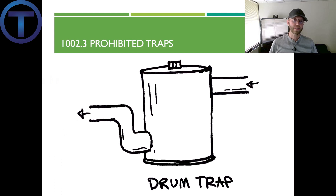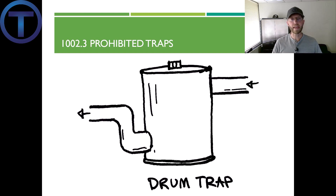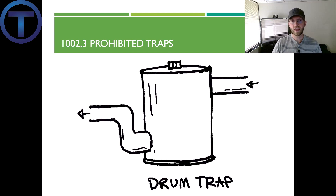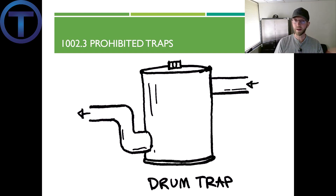Finally, prohibited trap number six: the drum trap. A drum trap is basically a cast iron can — the fluid comes in one side, and you create the trap by the way the 90s are formed on the outlet of the drum. These things are notorious for clogging. They were installed for decades, again probably prior to the 1970s, where you're going to see these in older homes. All right — I promised you the good, the bad, and the ugly. We've talked about how it should be done, we've seen what shouldn't be done, now let's look at the ugly.